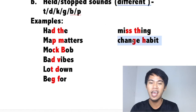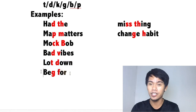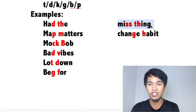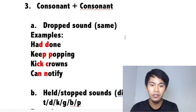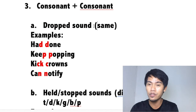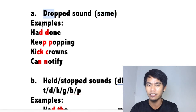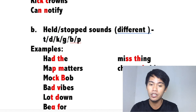Those are your held sounds. Repeat after me: 'head thought,' 'math matters,' 'mock ball,' 'bad vibes,' 'lock down,' 'beg for.' Exception: 'miss thing,' 'change habit.' That's it for consonant plus consonant. Review: under consonant plus consonant, we have the dropped sound and the held sound. For dropped sounds, the first and last sounds should be the same, so we can drop one. For held sounds, the sounds are different, and the initial sound is T, D, K, G, B, or P — then we do the held sound.